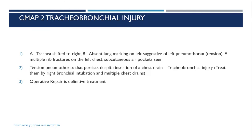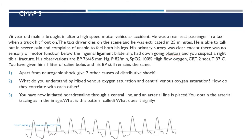Apart from neurogenic shock, the other two causes of distributive shock are septic shock and anaphylactic shock. Regarding mixed venous oxygen saturation (SvO2): it is obtained from a blood sample taken via a Swan-Ganz catheter from the pulmonary artery.